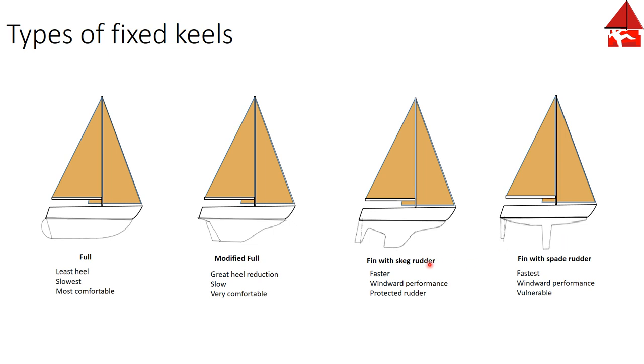Next is a fin keel with a spade rudder. Like the fin keel with a skeg rudder, the fin keel with a spade rudder has the fastest performance and better windward performance due to reduced wetted surface. They are the most vulnerable type of keel and rudder. Fin keels are typically bolted onto the hull, which makes them more susceptible to breaking off in a grounding. Most vulnerable of all is the rudder itself because it has nothing protecting it.